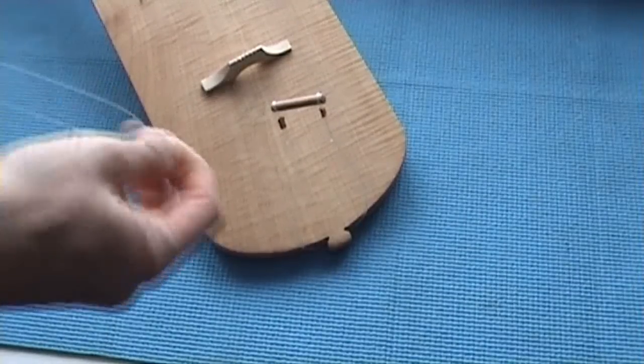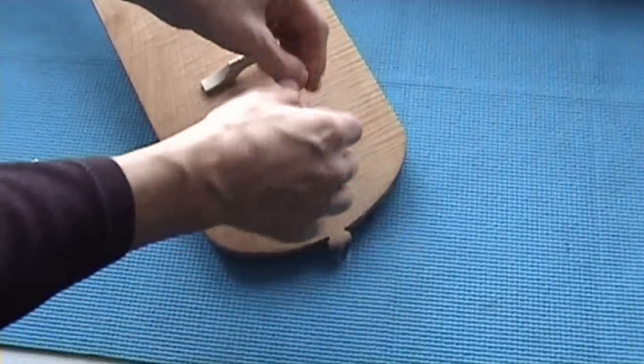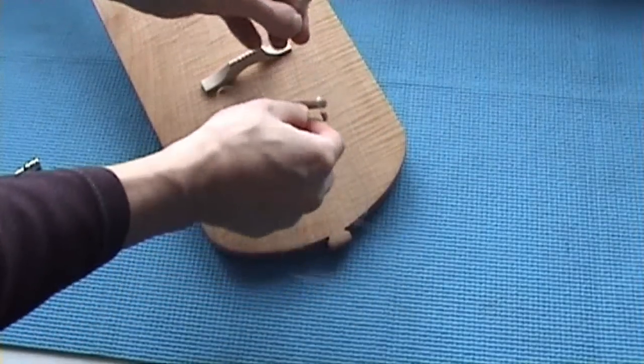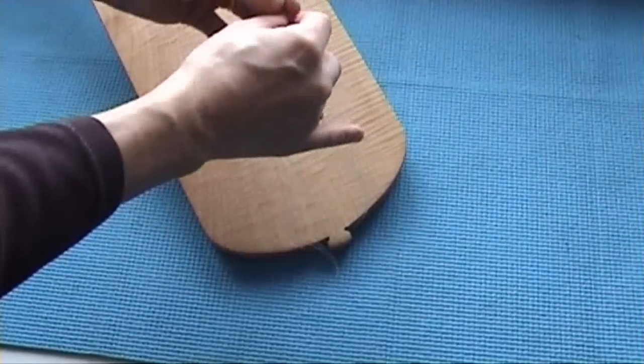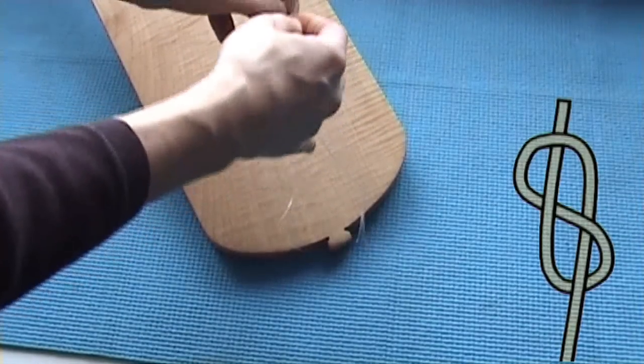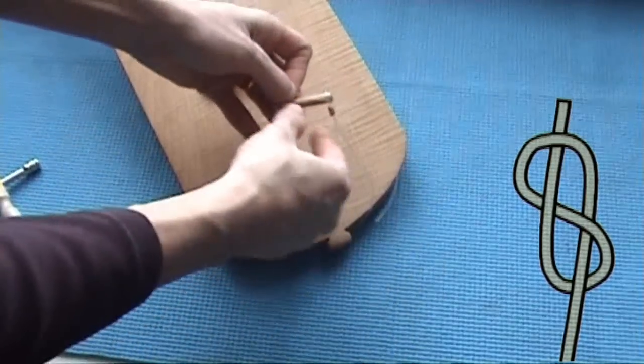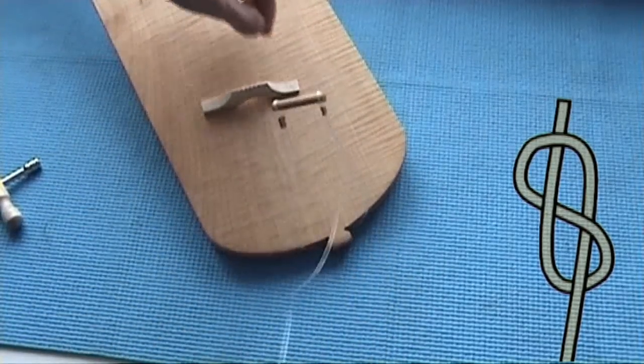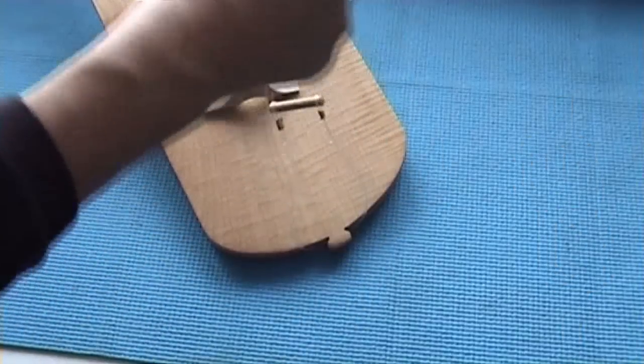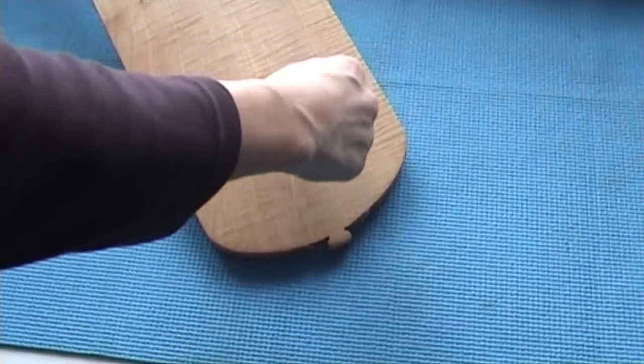We start with the thickest string, which is the low G-string. You hook it under, and then we need to tie a figure of eight knot. Once we have our figure of eight knot, then we simply insert the gut through there, and then we pull tight.